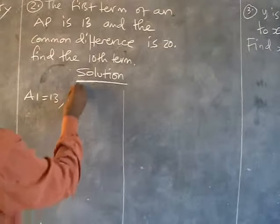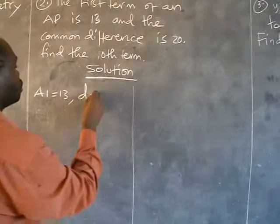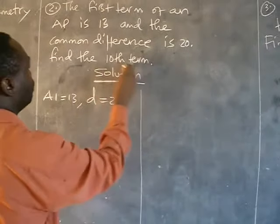And the common difference is 20, so D is 20.